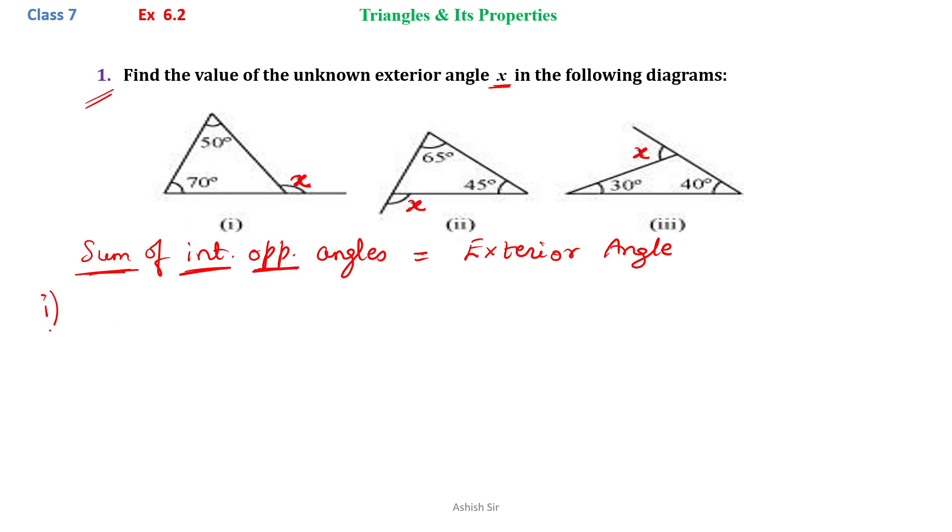Using this property, we can write that x equals the sum of the interior opposite angles, which is 50 plus 70. Therefore, x equals 120 degrees.